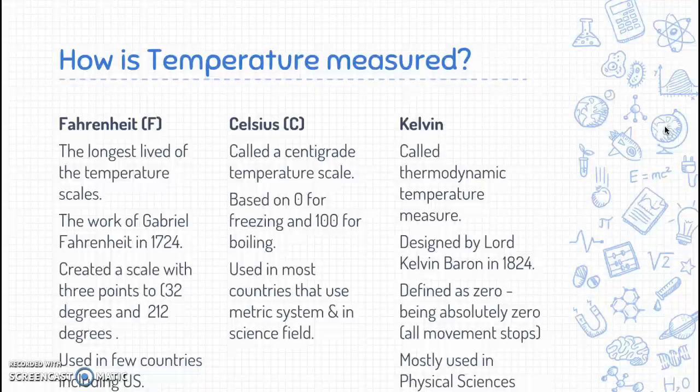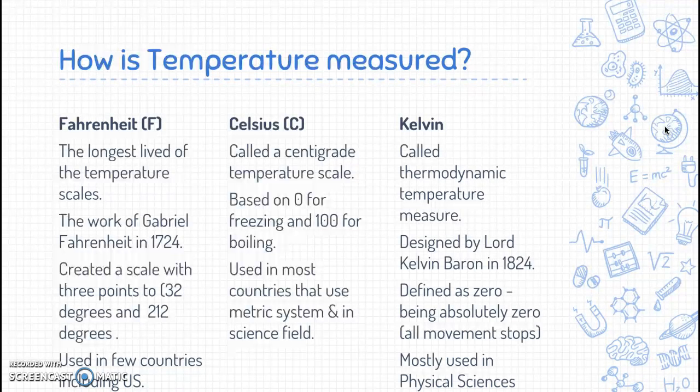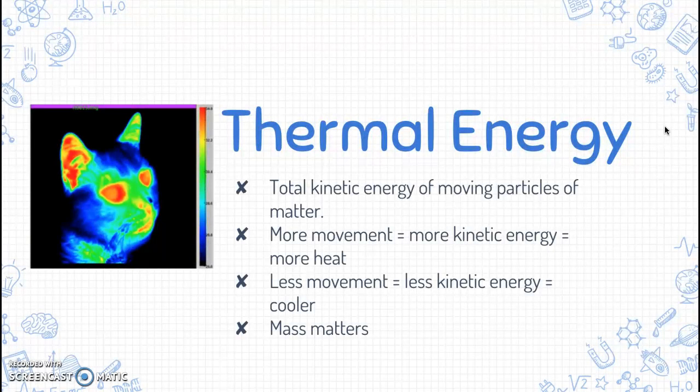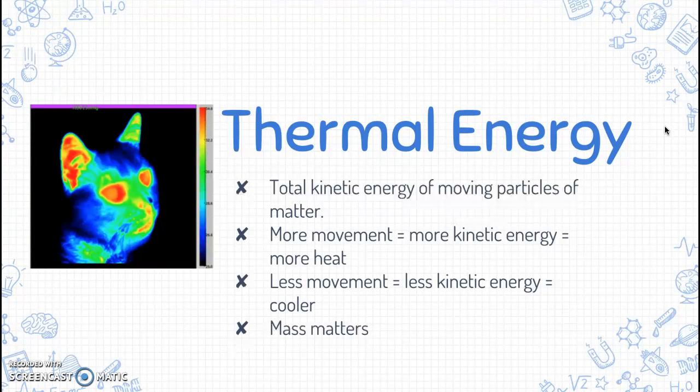Let's move on to thermal energy. Thermal energy is defined as the total kinetic energy of moving particles. Anything that is moving has kinetic energy, and the faster it is moving the more kinetic energy it has. The total kinetic energy of moving particles of matter is called thermal energy. It's not just hot things that have thermal energy. All matter has thermal energy, even matter that feels cold. That's because the particles of all matter are in constant motion and have kinetic energy. Thermal energy takes into account the mass, how much stuff is inside the object.